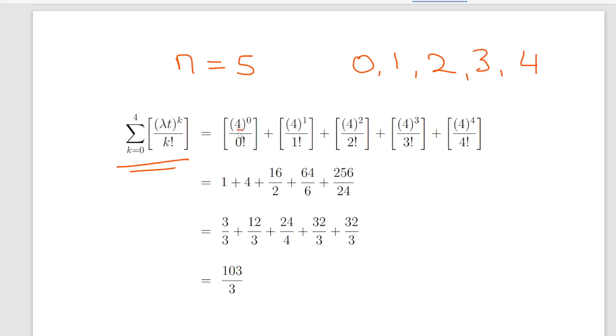Lambda times t is 4, so we have 4 the whole way through here. And k is going to be 0, 1, 2, 3, and 4. So we have 4^0/0! + 4^1/1! + 4^2/2! + 4^3/3! + 4^4/4!. That's a bit of number crunching there, but what you should get is 103 divided by 3.